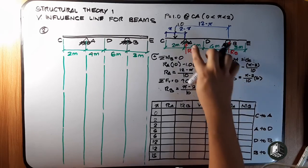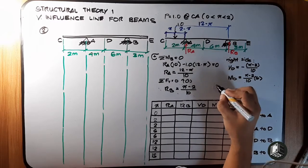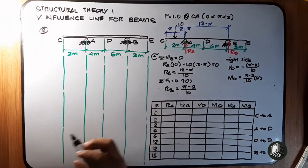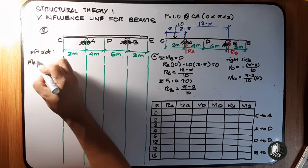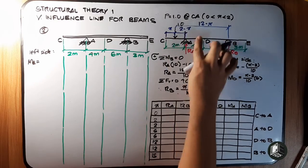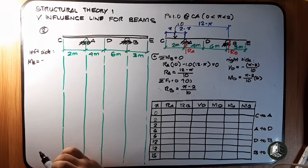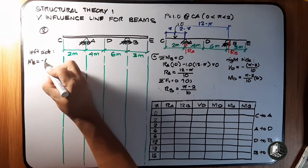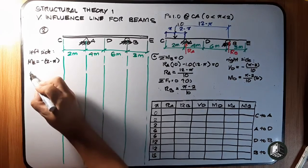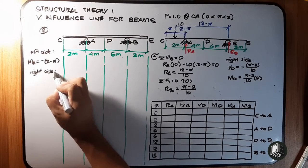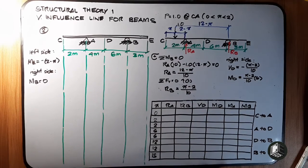For moment at A, we work from the left side at A. The 1.0 load rotates counterclockwise, so it is negative: moment at A equals negative 1.0 multiplied by (2 minus X), which gives negative (2 minus X). For moment at B, taking the right side, there are no forces there, so moment at B equals 0.